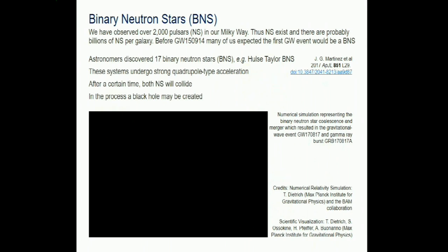When starting the first observation run in 2015, many colleagues were convinced the first detection would be the merger of two neutron stars. The reason: we know neutron stars exist - perhaps up to a billion in our galaxy. We have seen 2,000 pulsars, which are neutron stars, and we know about 17 binary neutron star systems where we can measure the orbit and know when they are going to merge.